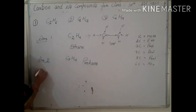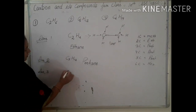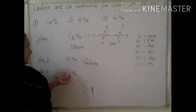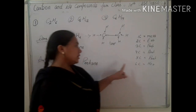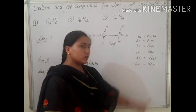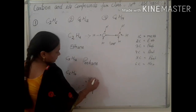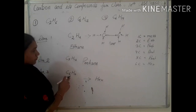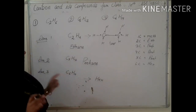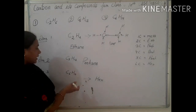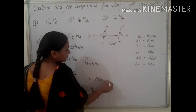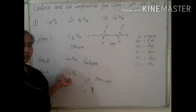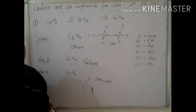Next is C6H14. Here there are six carbon atoms, so we use the stem 'hex.' In C6H14, the carbon atoms have single bonds. So we add '-ane' after 'hex,' and the IUPAC name of this hydrocarbon compound is hexane.